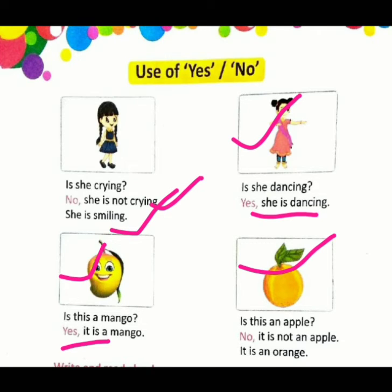Is this an apple? Kia yeh apple hai? Children, kya yeh apple hai? No — nahi. It is not an apple. It is an orange. Nahi, yeh apple nahi hai. Yeh orange hai. Okay.